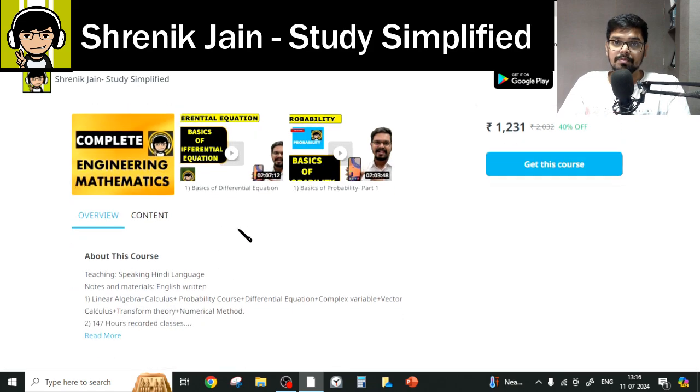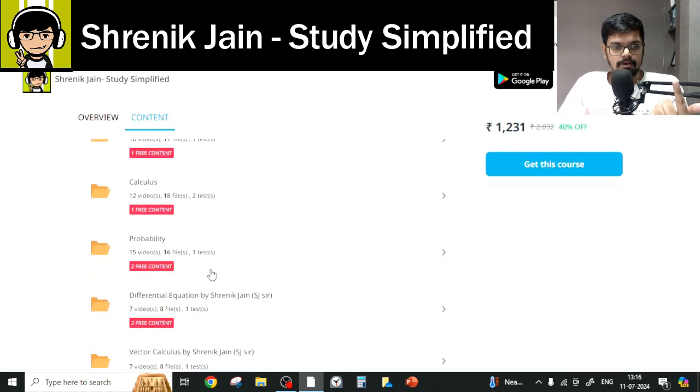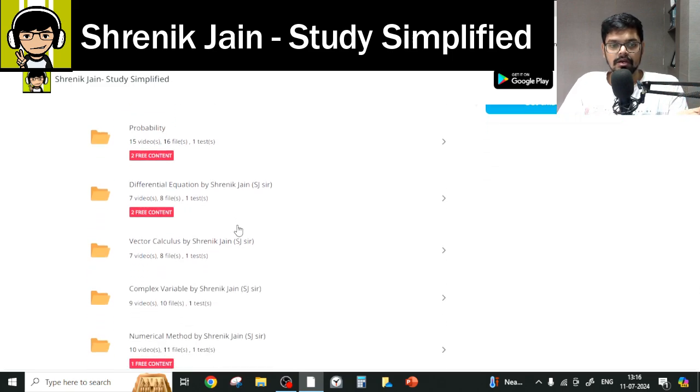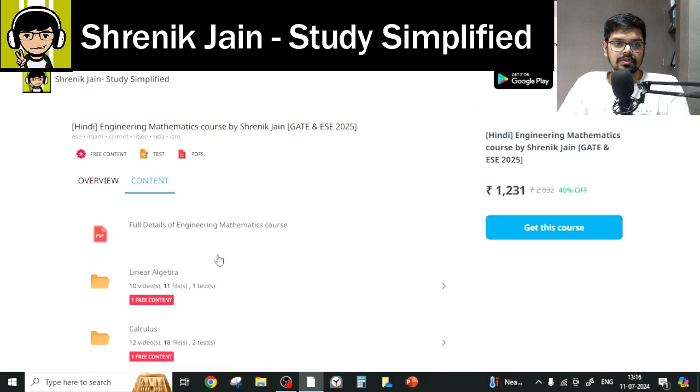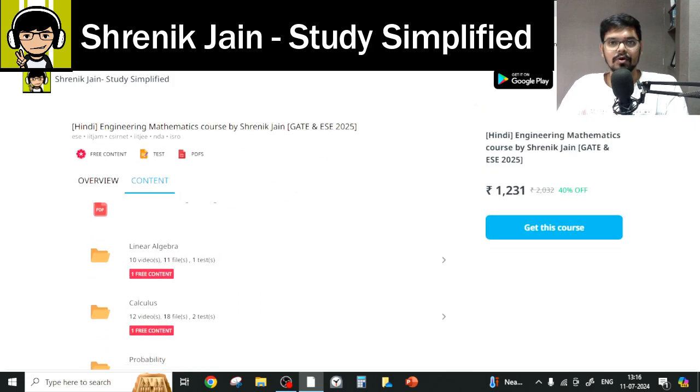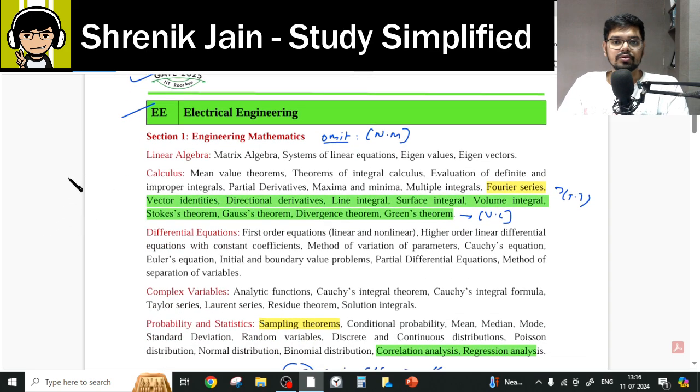Talking about how many chapters you have taught, in total 8 chapters are there: Linear Algebra, Calculus, Probability, Differential Equation, Vector Calculus, Complex Variable, Numerical Method and Transform Theory. The good news is you do not have to study everything because as per your official syllabus, IIT Roorkee 2025 Electrical Engineering, you do not have all the chapters.